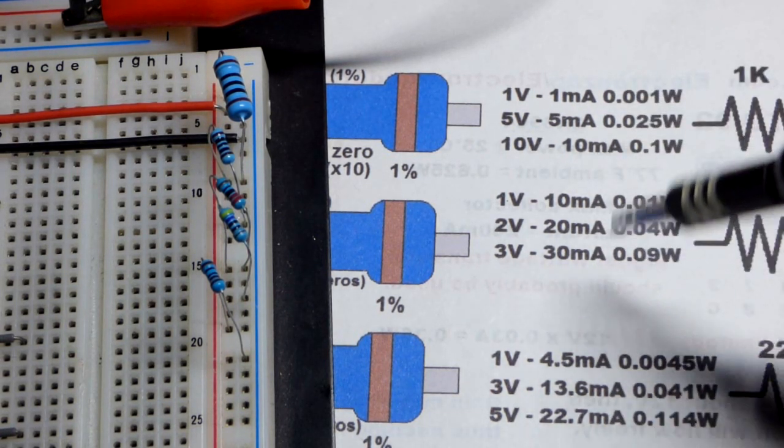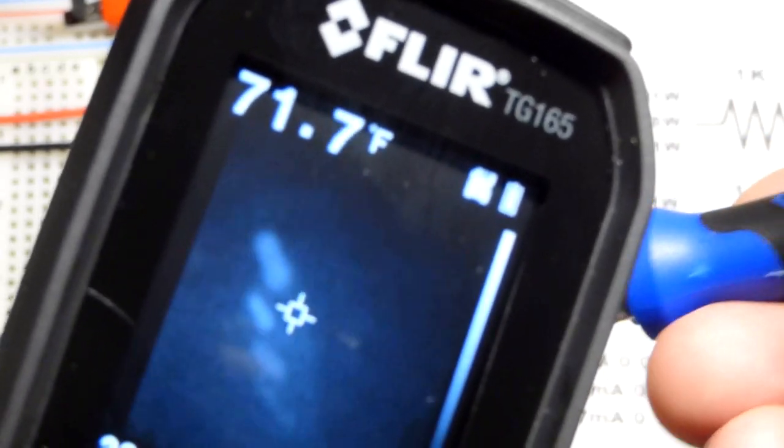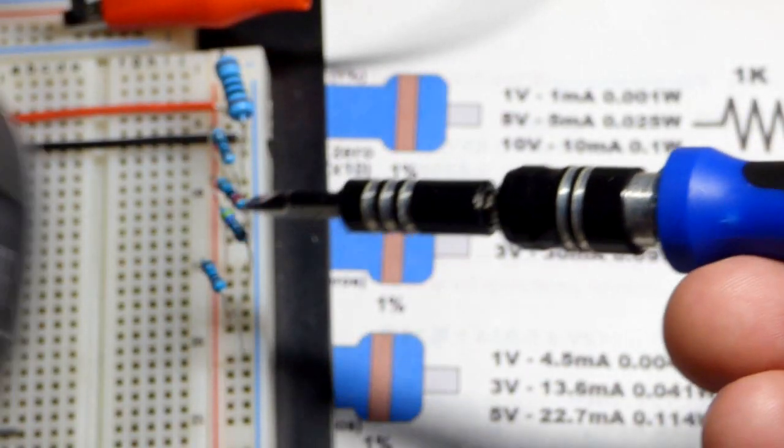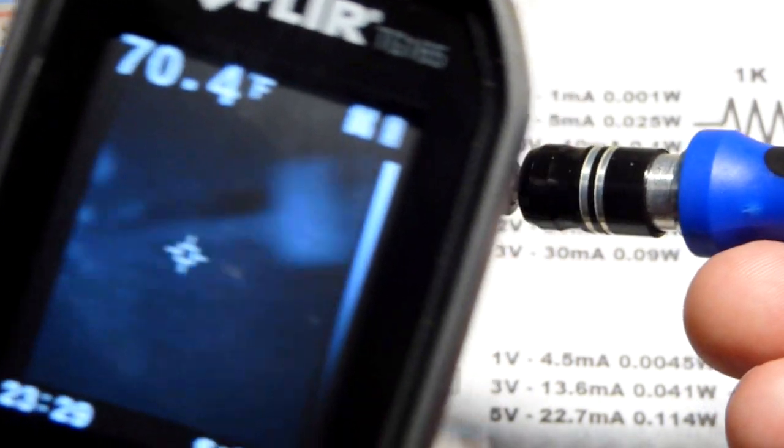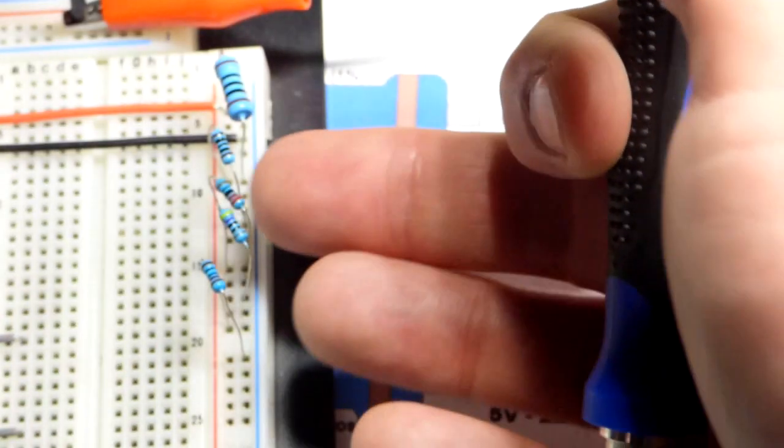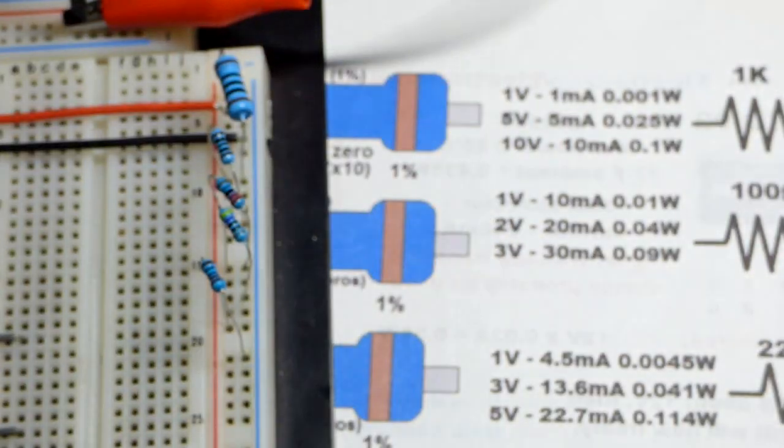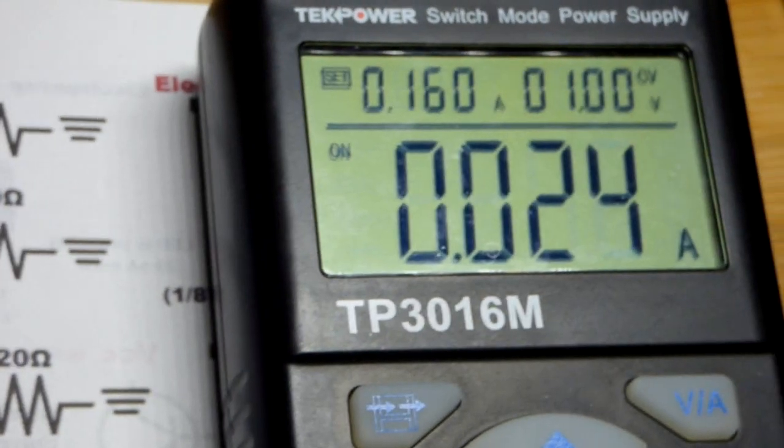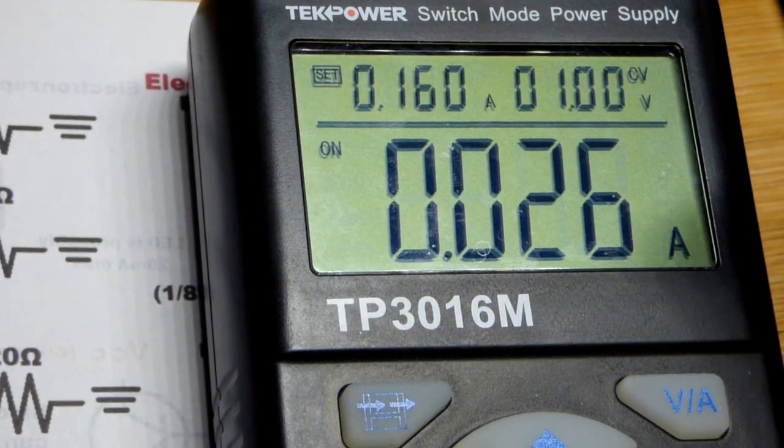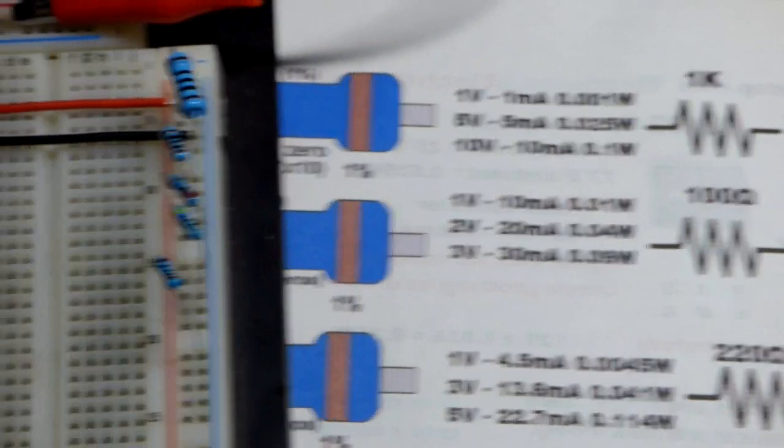So that's thousandths of an amp. And I got my FLIR camera. So you can see here that they're really not all that warm. Let's see if I can get, I've been touching this screwdriver. So you can see it's pretty warm compared to them. I can also put my finger by them right there. You can see they're not very warm at all with a one volt across them.